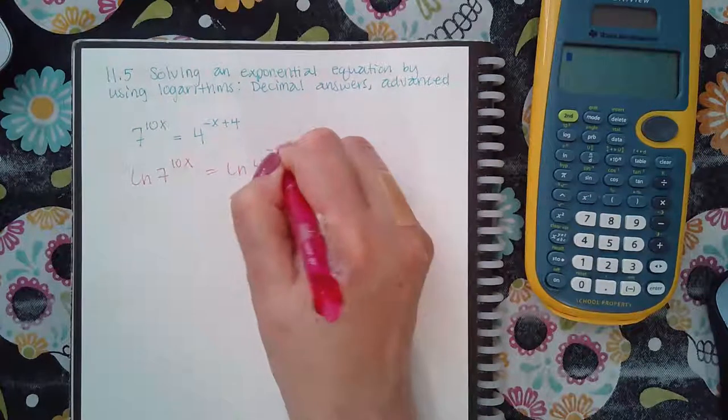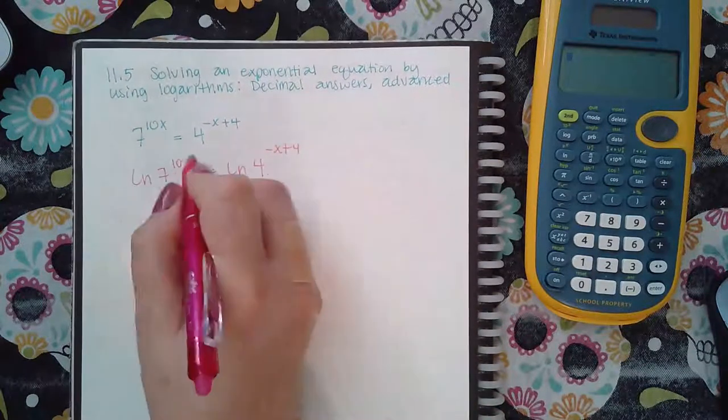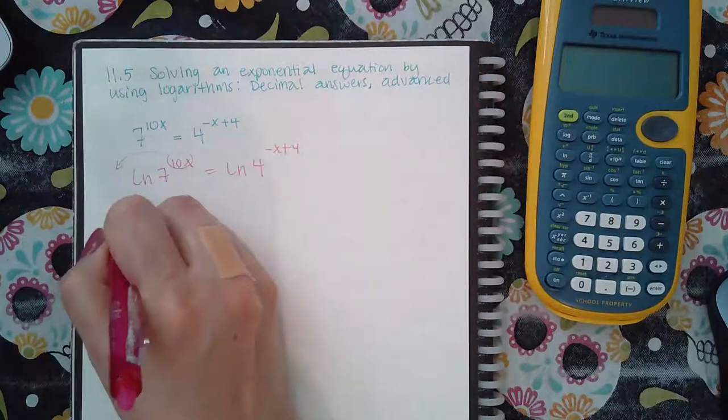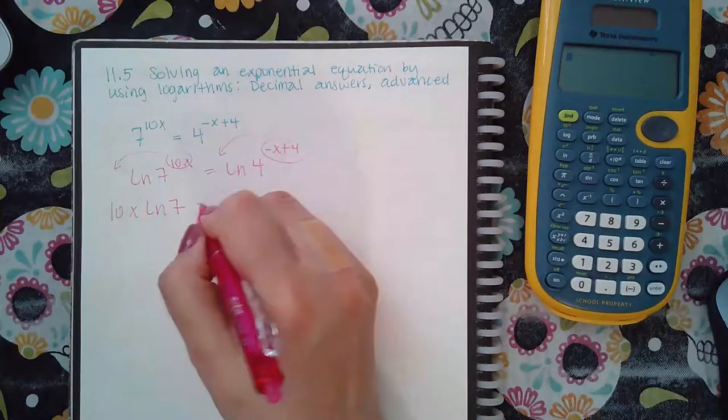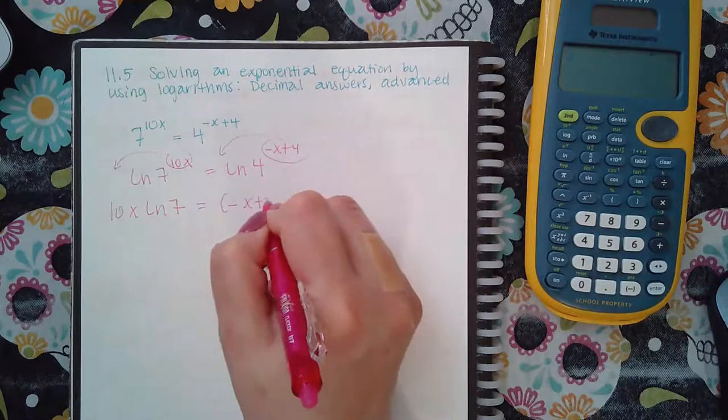When I do that, that allows me to take those exponents and move them to the front. So this is 10x ln(7). This moves to the front, but it's two terms, so it goes in parentheses.